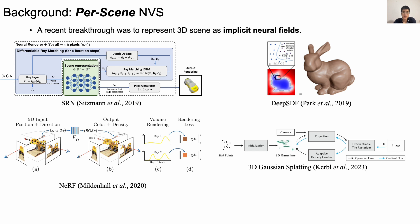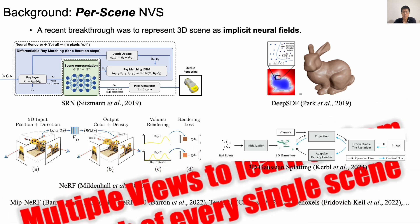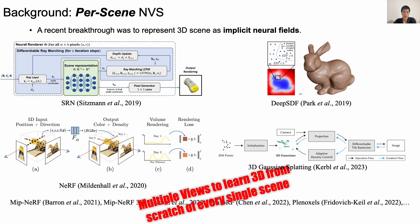A recent breakthrough was to represent 3D scenes as implicit neural fields, such as scene representation networks, deep signed distance functions, neural radiance fields, and 3D Gaussian splatting. They have been followed by a lot of works. However, most of those systems require multiple views to learn the 3D representation from scratch for every single scene.